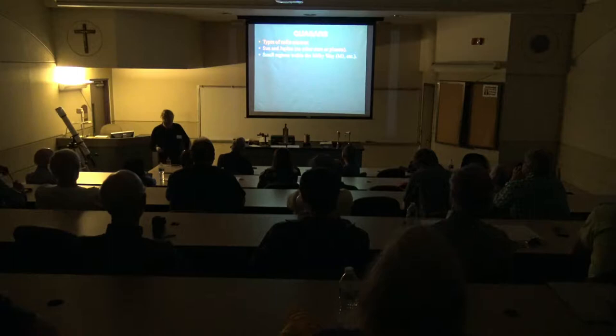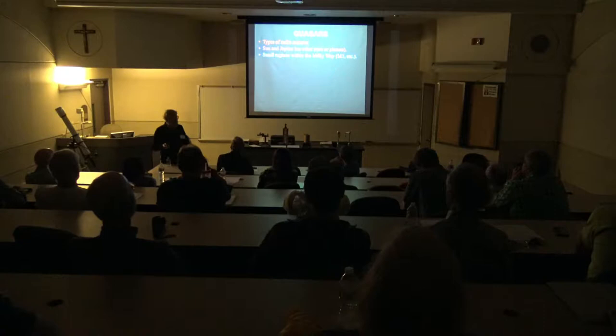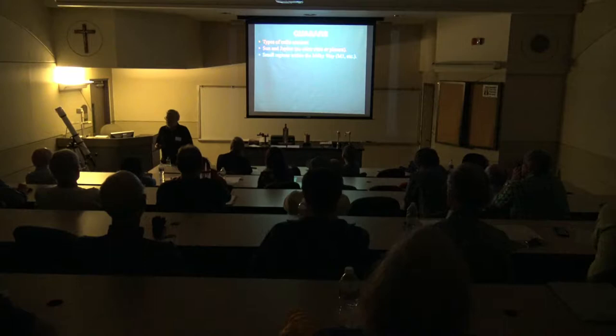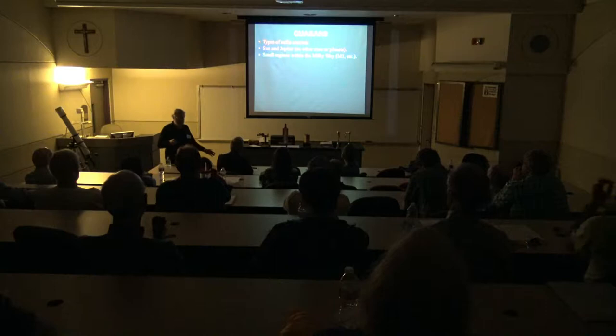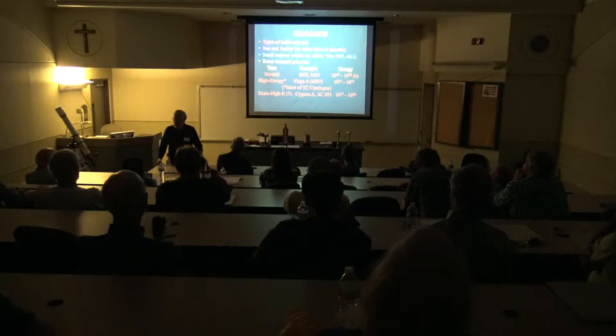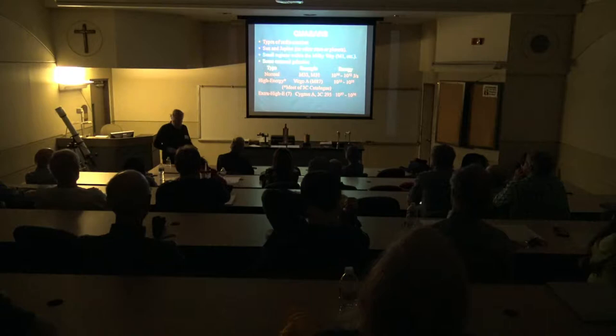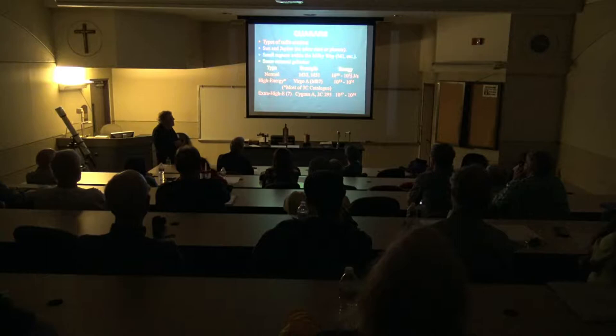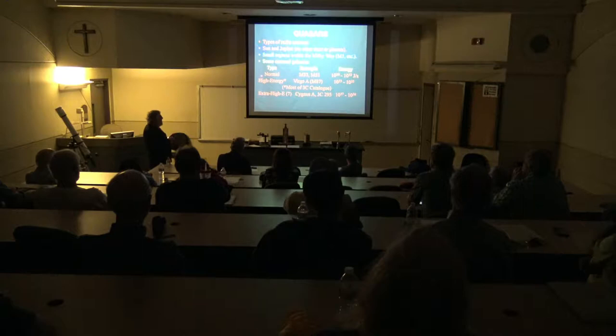Other small regions within the Milky Way were also radio sources — M1, the Crab Nebula in Taurus, no big surprise there. Some external galaxies outside the Milky Way were radio sources as well: M33 the Triangulum Galaxy, M51 the Whirlpool Galaxy, putting out 10 to the 30th, 10 to the 32nd joules per second. Then there were high-energy galaxies like Virgo A, also known as M87.